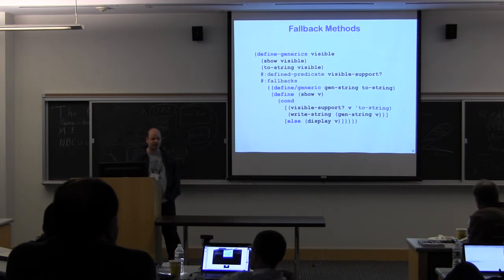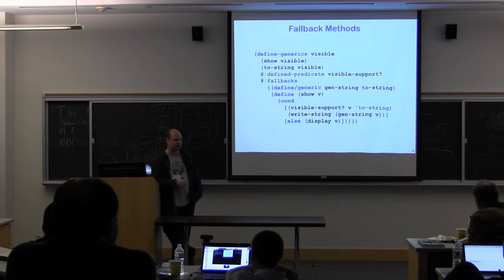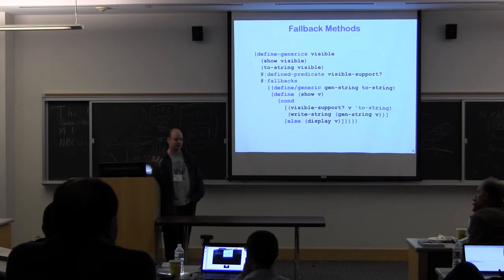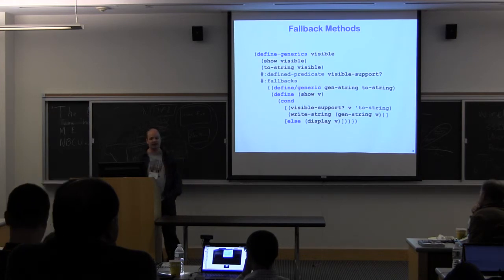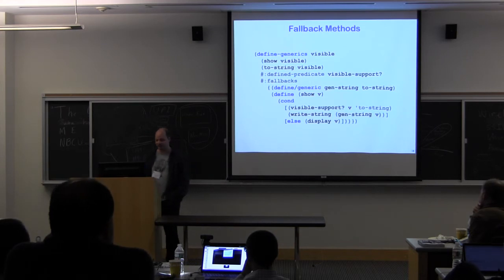The documentation for sets, for instance, says all the different combinations you need. So for instance, you can implement intersection by removing elements from one of your given sets or adding elements to an empty set. And so depending what's implemented, you get a different fallback that's kind of intelligently built up from whatever your type provides.